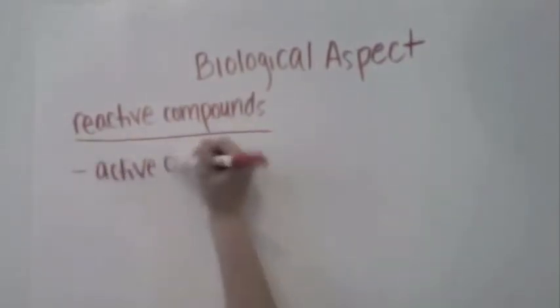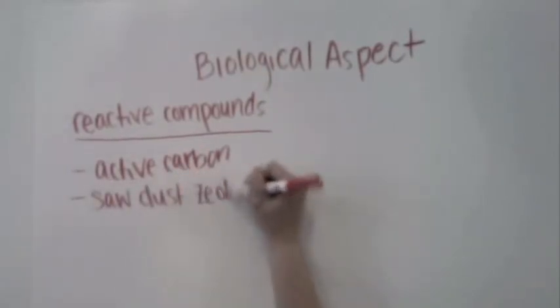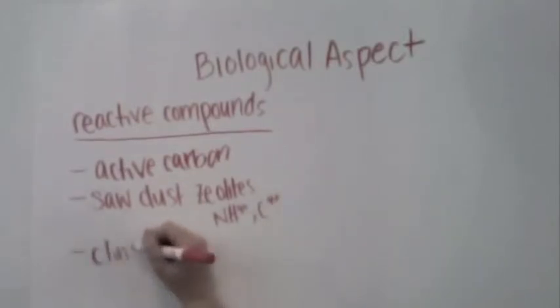Some of these reactive compounds present in the reactive cell include active carbon, sawdust zeolites, clinoptilolite, and polypsite.